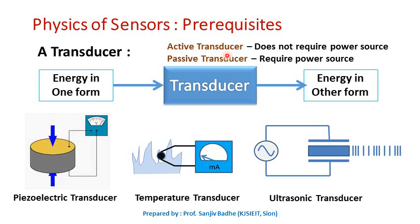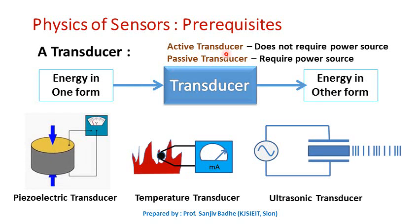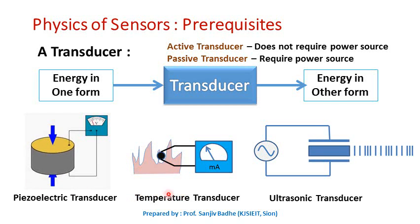A transducer can be an active transducer or a passive transducer depending on whether a power source is required. An active transducer does not require any power source. It operates on the principle of energy conservation and generates an electrical signal proportional to the input signal. The piezoelectric transducer and temperature transducer are examples of active transducers, as they do not require any external power source.